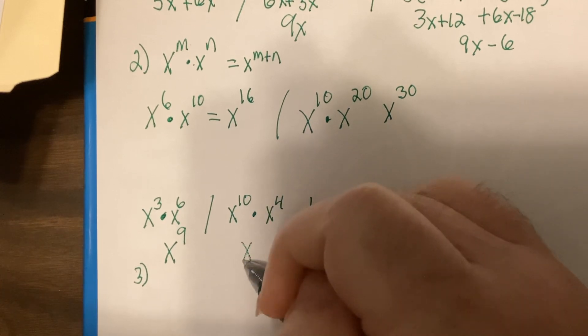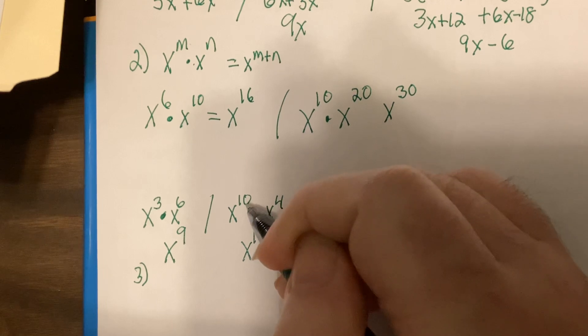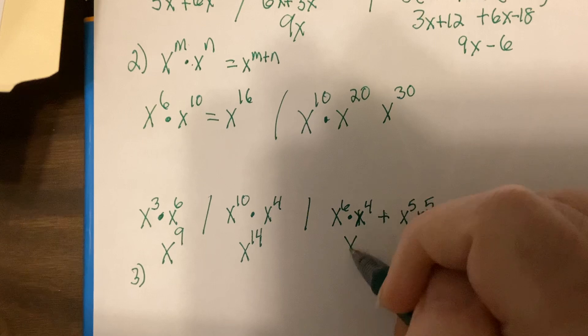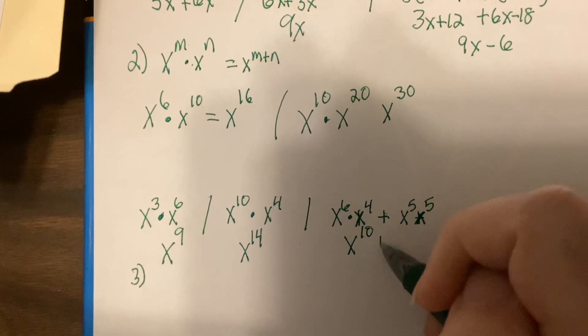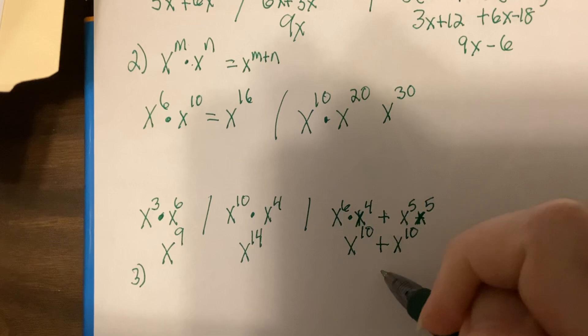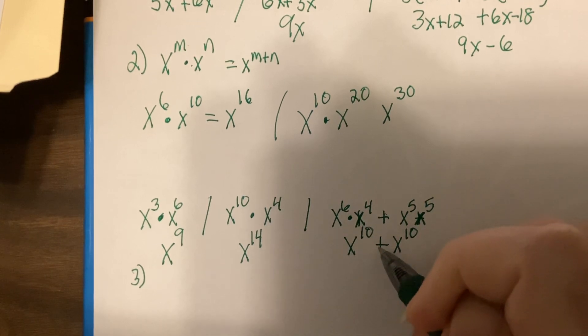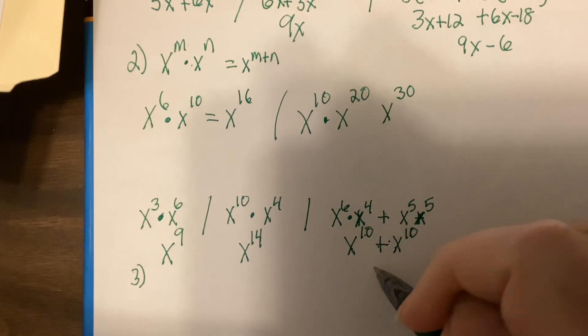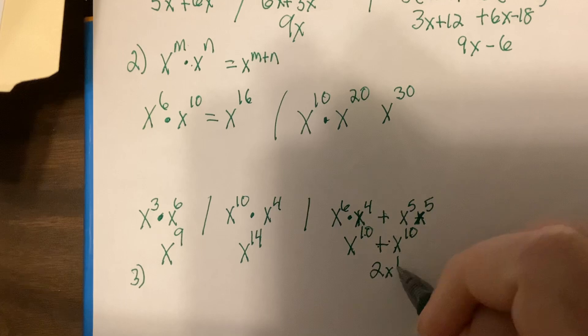So, this would be X to the 14th. Because when you multiply two things, same base, you add the powers. So, this one, this would be X to the 10th plus X to the 10th. Hey, when you're adding two things, same base, same power, you just add the coefficients. So, it would be 2X to the 10th.